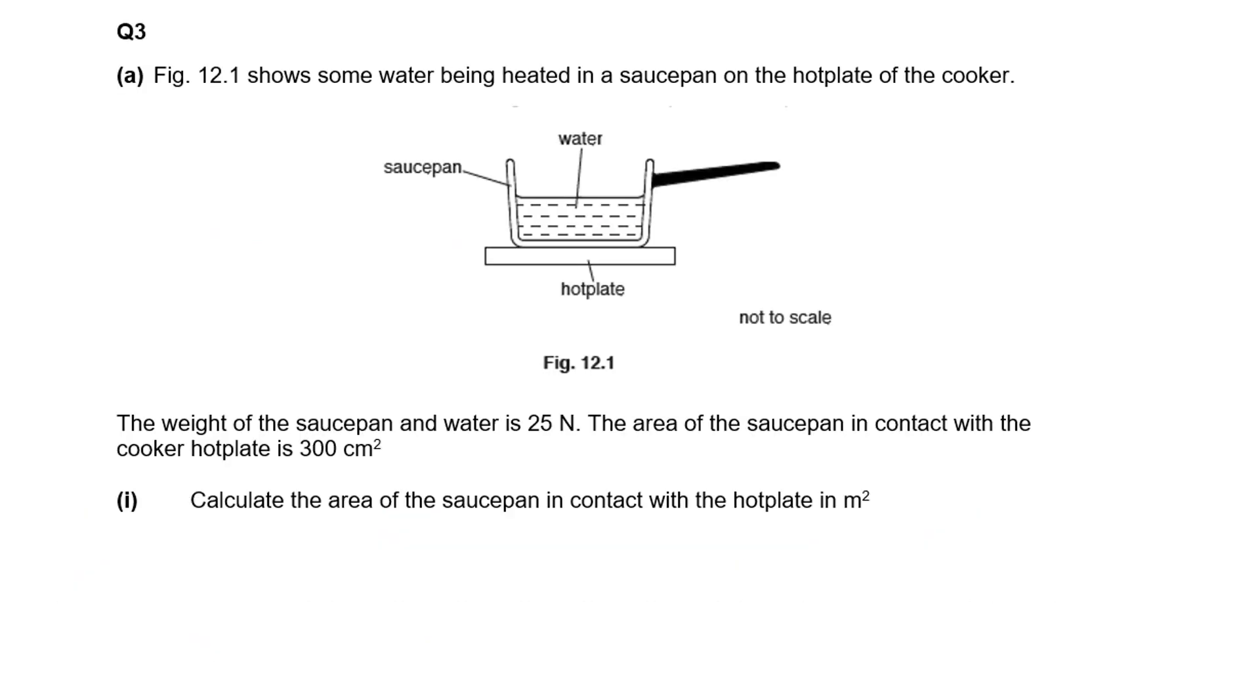We've got some water being heated in a saucepan. The weight of the saucepan and water is 25 newtons, the area is 30 centimeters squared. Calculate the area in meters squared. One meter is a hundred centimeters, so one meter squared would be a hundred squared centimeters squared, which is 10,000. We're going to divide 300 by 10,000 to give us 0.03 meters squared.